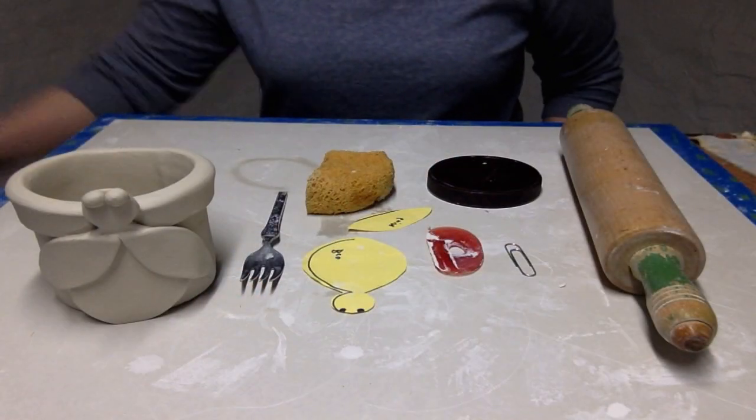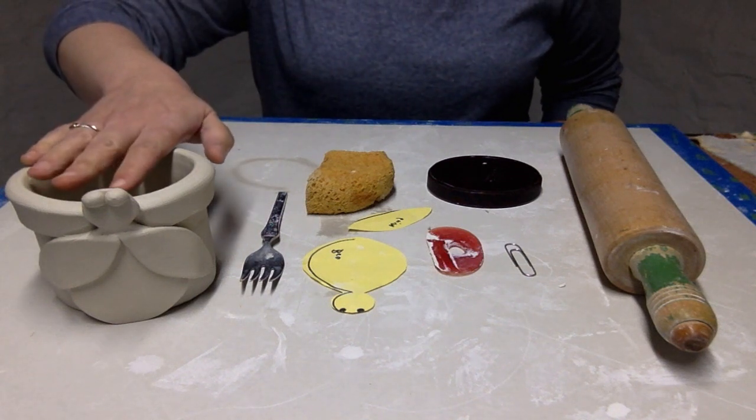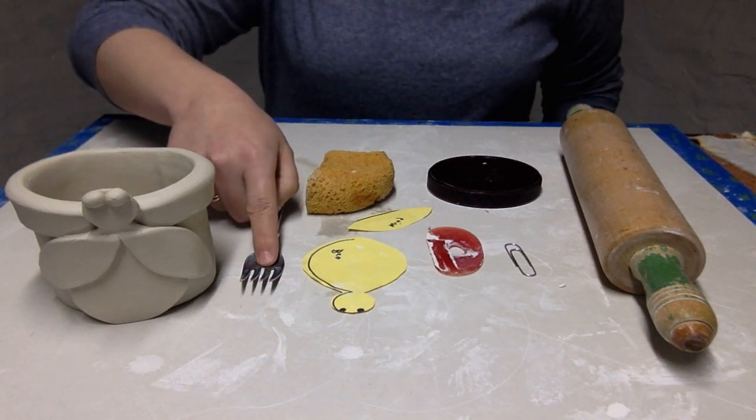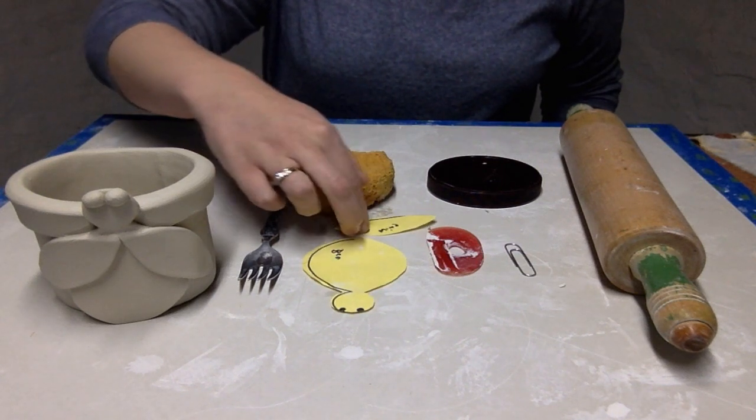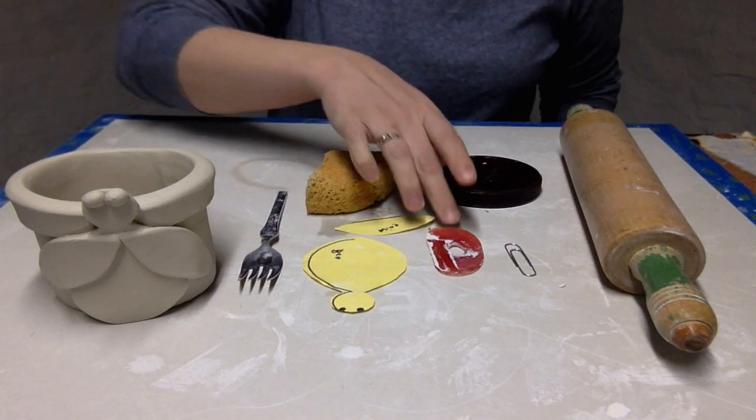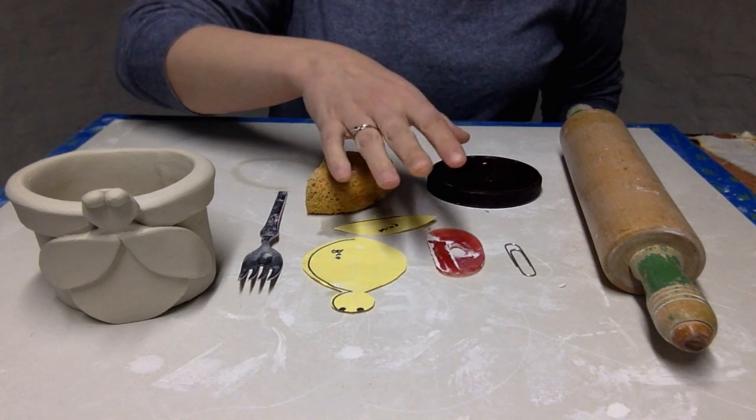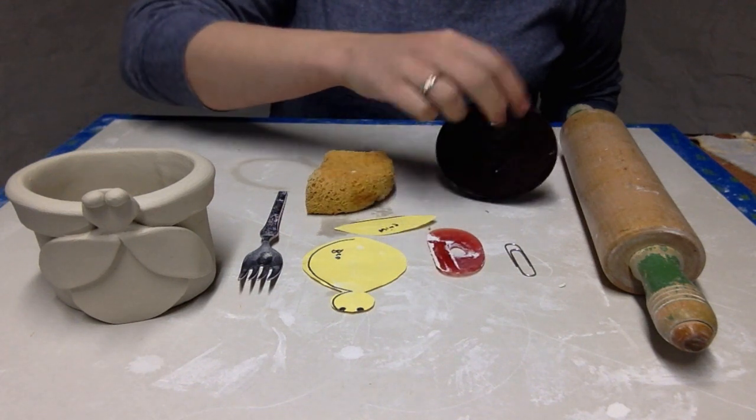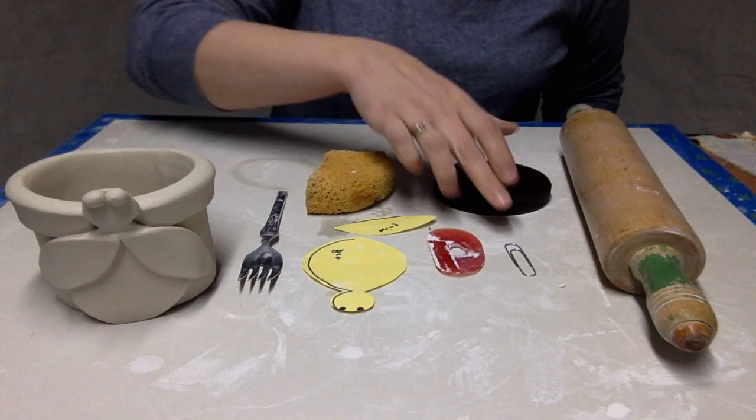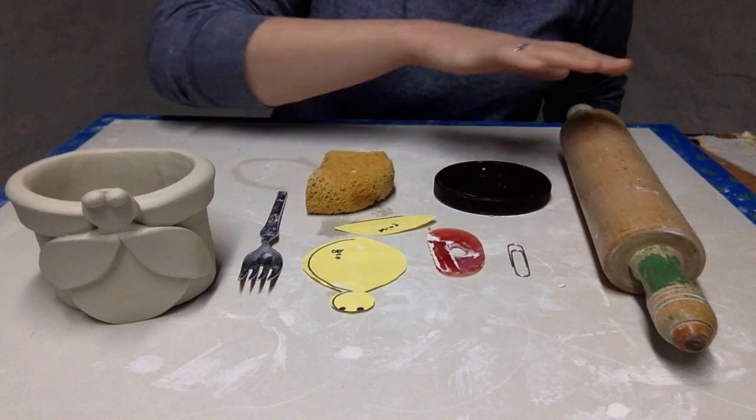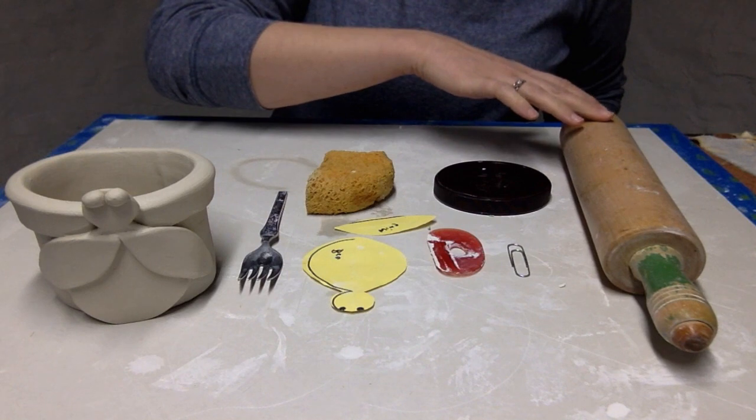The things we'll need to get started to make this planter are a fork, a sponge, paper and scissors to make the template cutouts, a rib tool or some kind of credit card or gift card for a smooth edge, a lid to use as a circle template, a paperclip, and a rolling pin if you have one.